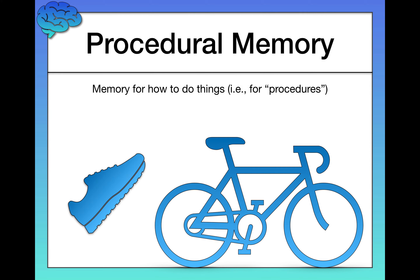Next we have procedural memory — memory for how to do things, that is memory for procedures. For example, tying your shoes. Chances are you don't think through the mechanics of tying your shoes every time. Now that you've learned it, it's part of your implicit, long-term procedural memory. Same with riding a bike — even if you stopped for ten years, you can come back and ride it. Knowing how to drive a car or open a doorknob are all parts of your procedural memory.